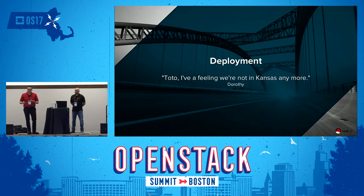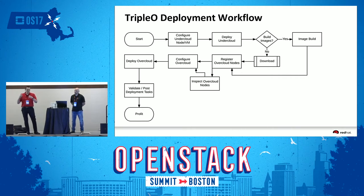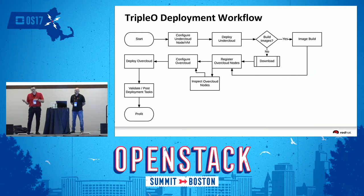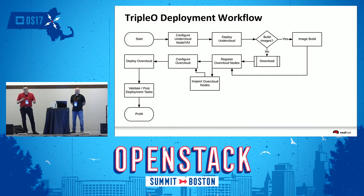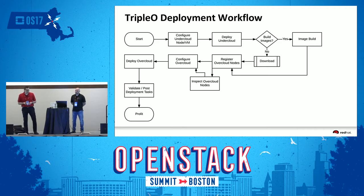So how do you deploy OpenStack using Triple O? You start with the undercloud — a seed OpenStack running on a single host. Then you either create images for your overcloud or download them. You register your bare metal nodes, inspect them to find out details like how many NICs they have, and then you deploy the overcloud. You validate and do any post-deployment tasks — and profit.